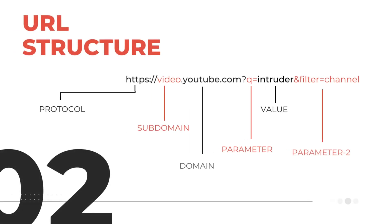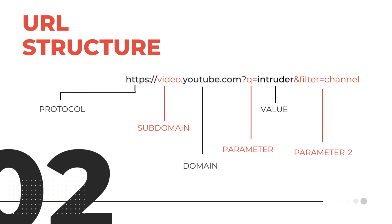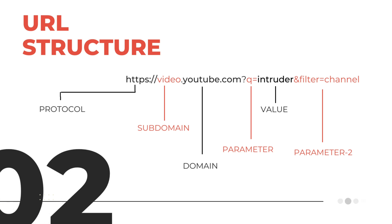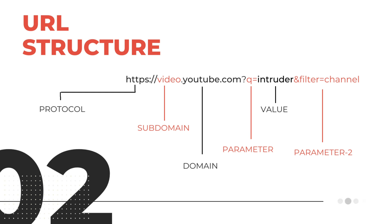Let's move on to URL structure. You must have seen this type of URL in your browser when visiting some domains. Let's consider a URL having youtube.com as the domain and go through it one by one. First, HTTPS — it is the protocol, the communication method through which the website is connected. In web applications, two types of protocols are used: HTTP and HTTPS.